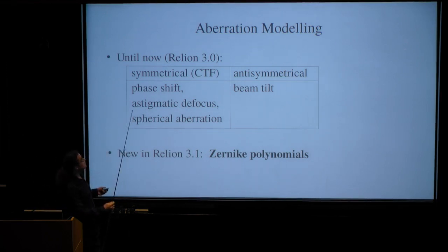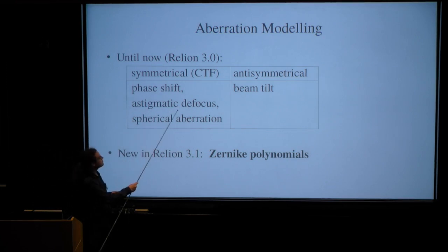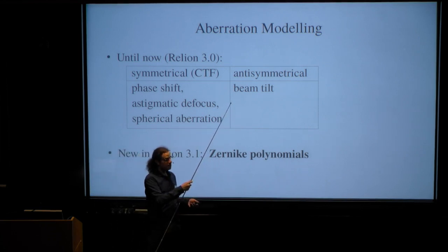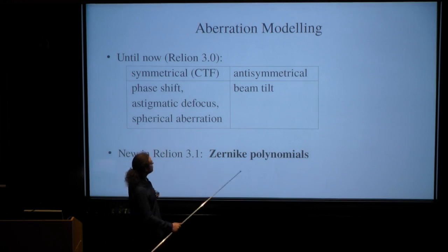Until now, in Relion 3.0 at least, for the CTF we used only these three effect basis functions. We have a constant phase shift or amplitude contrast term, a quadratic astigmatically focused term with three degrees of freedom, and a radial asymmetrical fourth order term for the spherical aberration. These are the only five degrees of freedom for the traditional CTF. And on the anti-symmetrical side, we've introduced beam tilts for Relion 3.0. In Relion 3.1, we will allow for arbitrary Zernike polynomials in both columns.